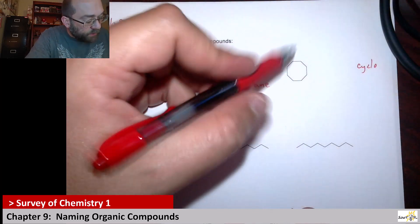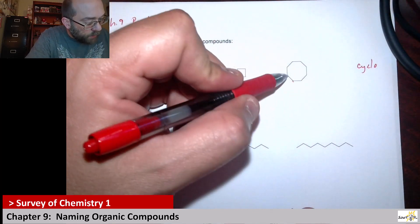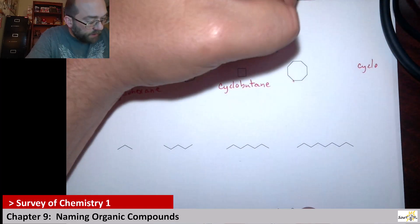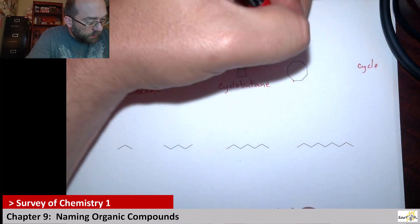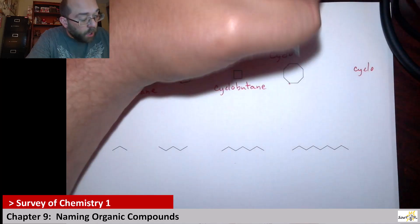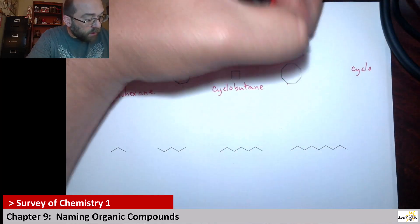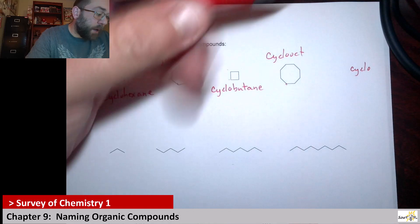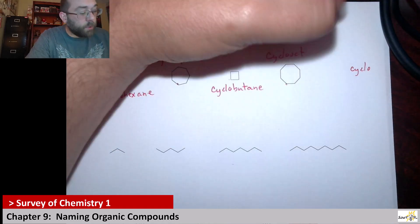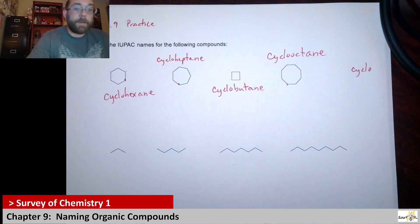Here we have another ring, so cyclo. It's one, two, three, four, five, six, seven, eight carbons. It is cyclo because it's a ring, eight carbons means we use oct, so cyclo-oct. And it is nothing but single bonds, so we use ane — cyclooctane.